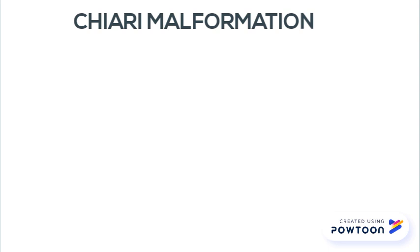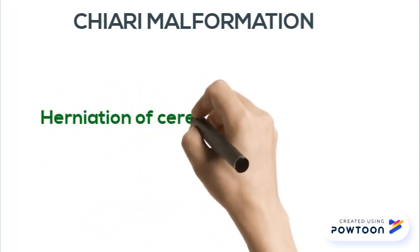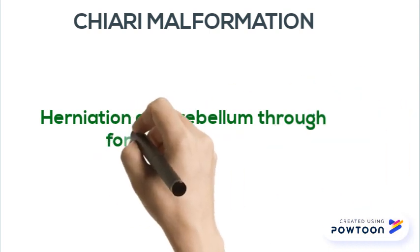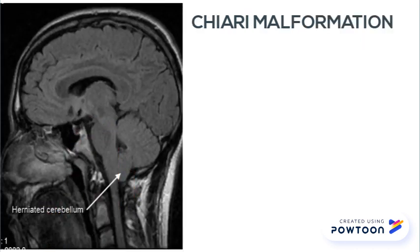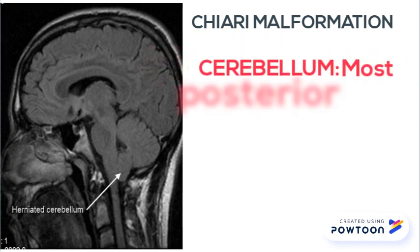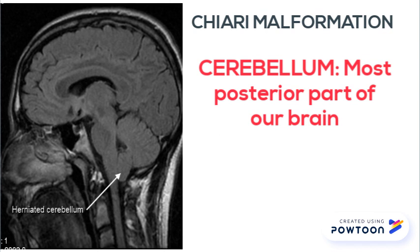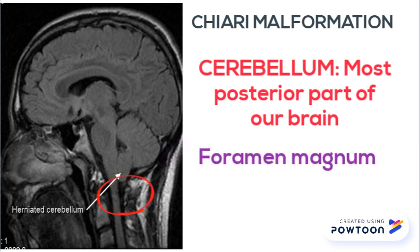The Chiari malformation is described as a herniation of the cerebellum through the foramen magnum. This is basically the MRI of the brain and the arrow shows the cerebellum, which is the most posterior part of our brain. The foramen magnum is basically a hole in the base of the skull through which the spinal cord passes.